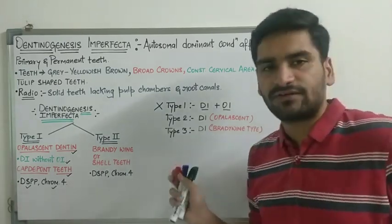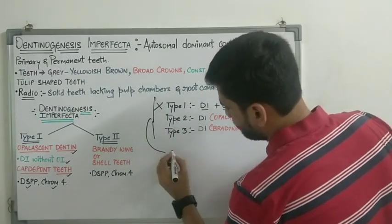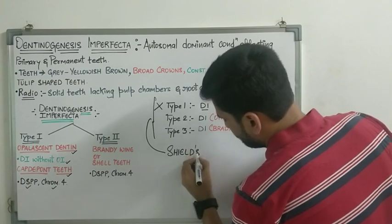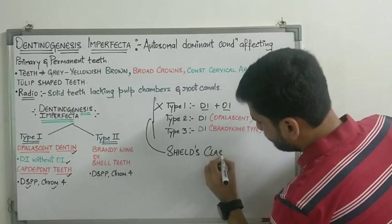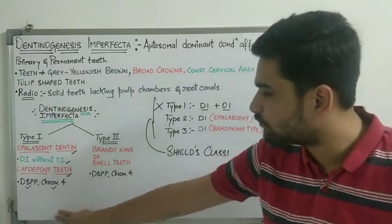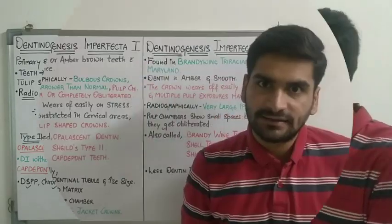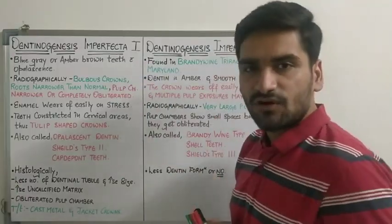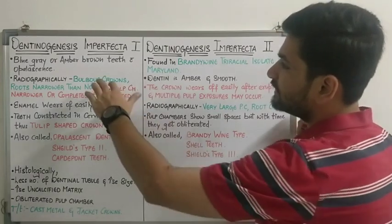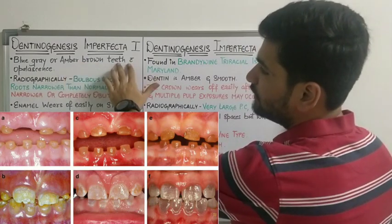So these are the two main classifications you need to consider. The other name of dentinogenesis imperfecta type 1 can also be Shields type 2, and for type 2 it can be Shields type 3. Moving on to the description of both types - type 1 and type 2. In type 1 dentinogenesis imperfecta, the teeth are going to appear blue-gray or amber-brown in color and they are going to appear opalescent.